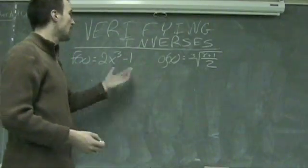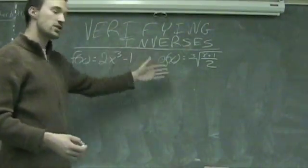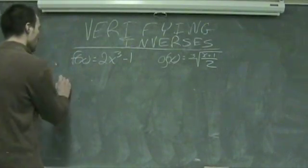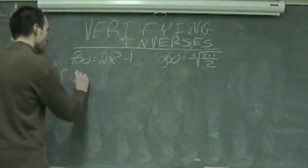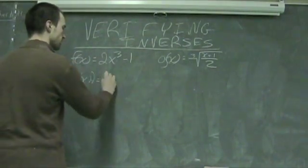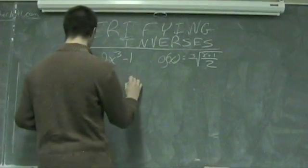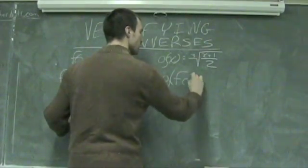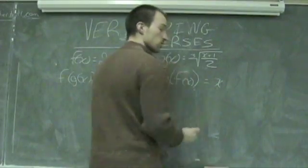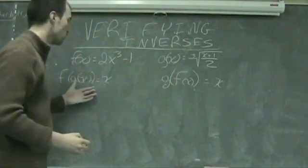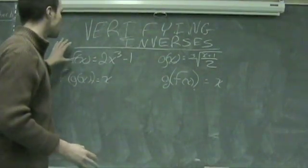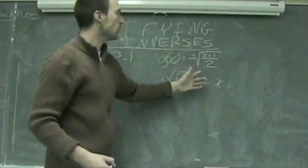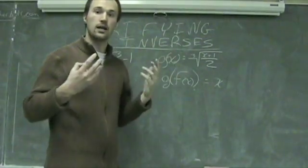How do we check whether or not two functions are inverses of each other? Basically we do the composition of those two functions. We're going to check whether f of g of x is equal to x, and whether g of f of x is also equal to x. So we're going to perform these two operations with these two functions: f of x equals 2x cubed minus 1, and g of x is the cube root of the quantity x plus 1, all divided by 2.